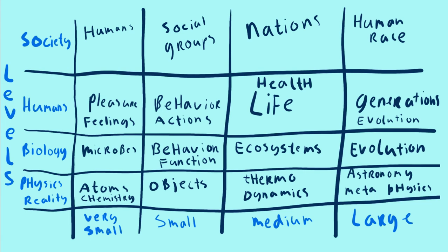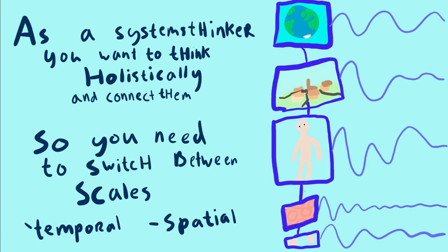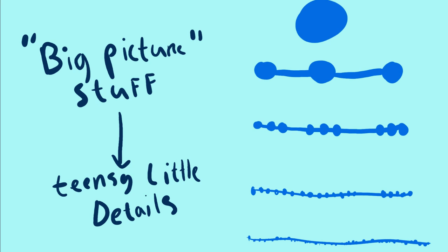But as a systems thinker, you want to look at the world holistically and connect them together. So you have to switch between these scales on the temporal and on the spatial scale. You have to switch from looking at the big picture stuff to looking at the tiny little details, and you can look at those at levels from different scales.